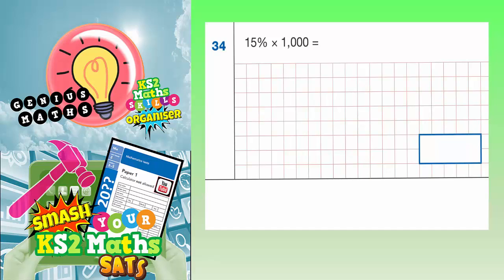Question 34: 15% times by 1,000. Now the first thing to realize here is that they've been a bit sneaky by putting the times in there. 15% times 1,000 is basically the same as saying 15% of 1,000. So if we can figure out 15% of 1,000, we'll have answered the question.